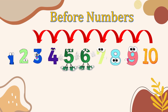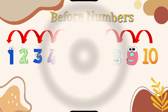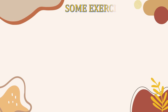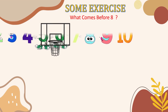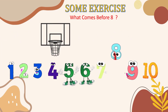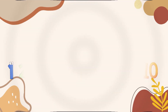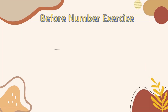We have to move always towards left or backwards. Let's do some exercise. What comes before 8? First we will write down the counting 1 to 10, find 8 and move towards left. This is 7, so before 8 is 7.